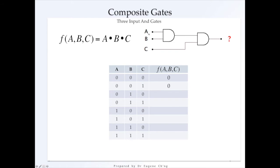If the two for the first gate is 0, and C is 1, we get a 0 because an AND gate requires all to be 1s. All to be true.